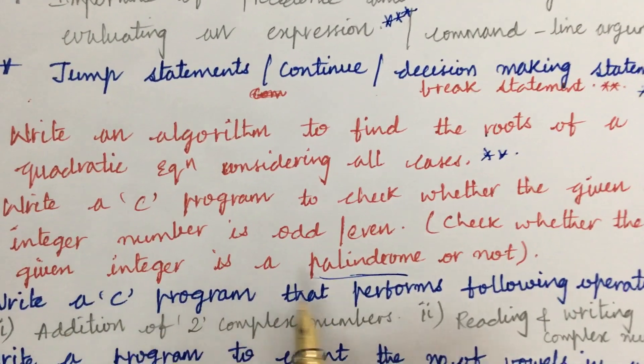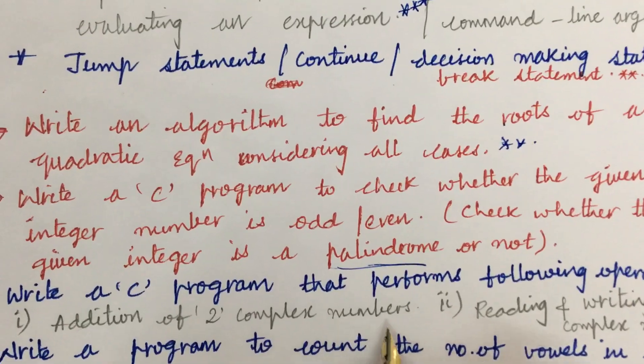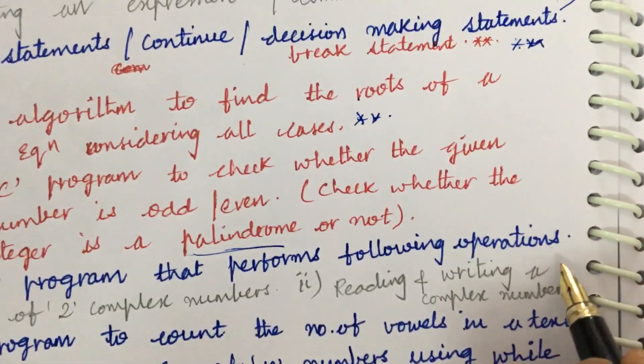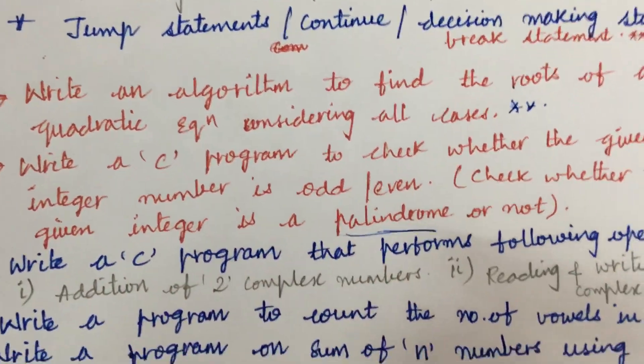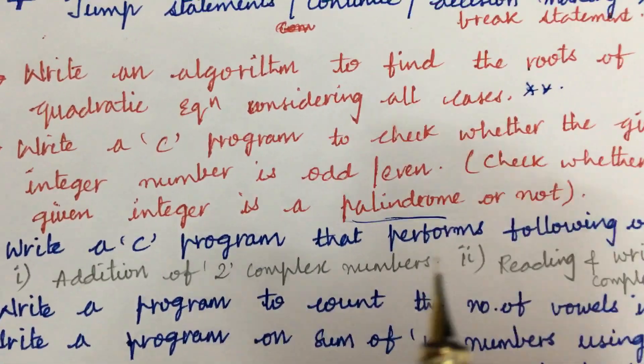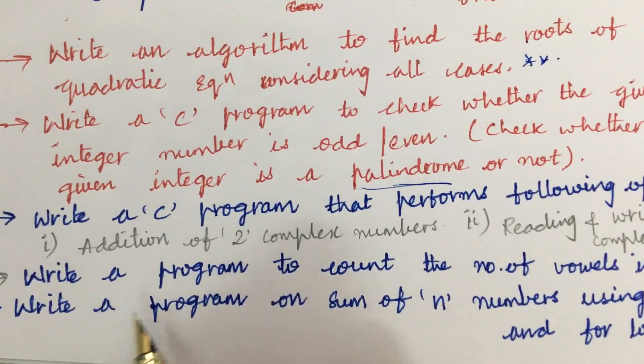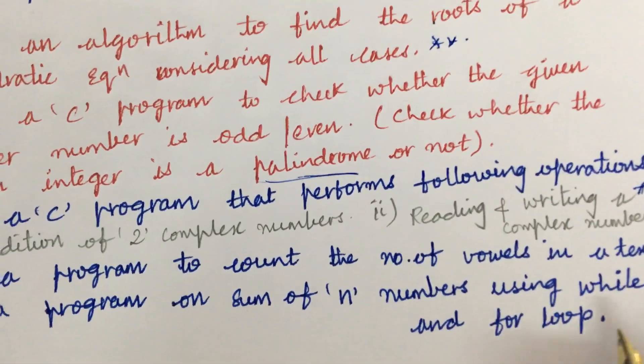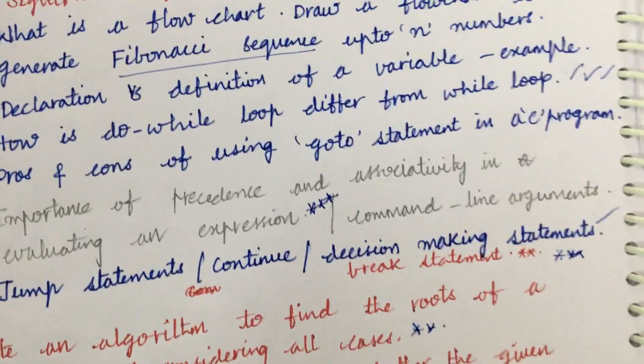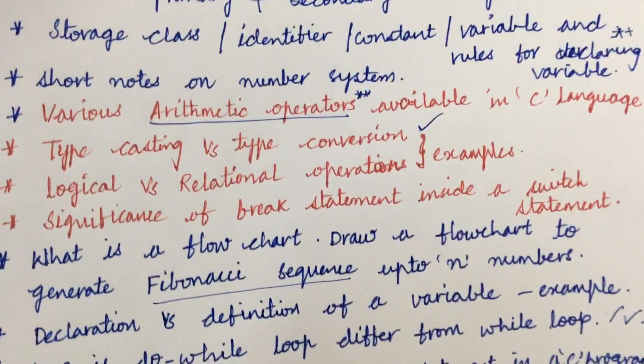Write a C program that performs the following operations like addition of two complex numbers as well as reading and writing of a complex number - said to be very important. The programs which I have taken into consideration are repeatedly asked and you are supposed to work out even the other programs also. Write a program to count the number of vowels in a text and also write a program on sum of n numbers using while and for loop. Do expect these questions compulsory in the examination paper.